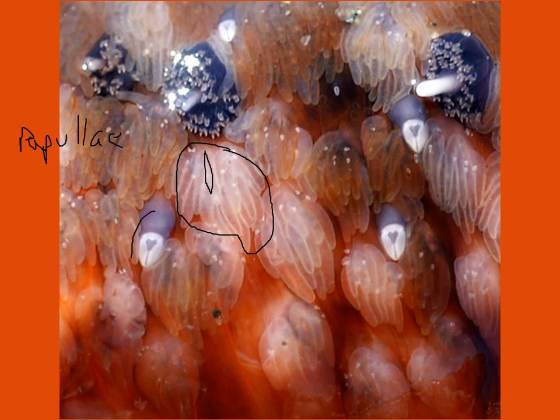They also have these amazing structures called pedicellariae, which come in two sizes — we'll look at those in the next video. The reason you never see anything growing on the surface of a starfish is these little pinchers act as a way to keep things from landing and settling. Larvae that might settle on the surface of the starfish will be crushed by these structures.